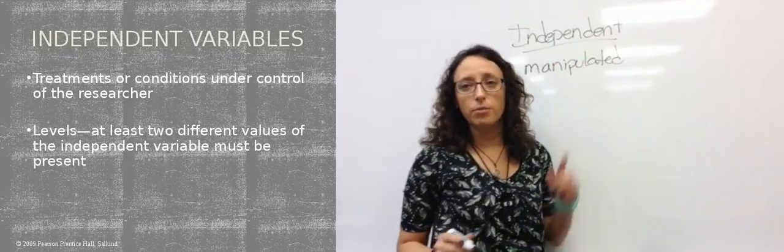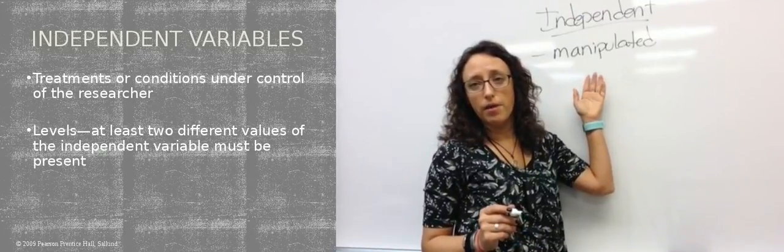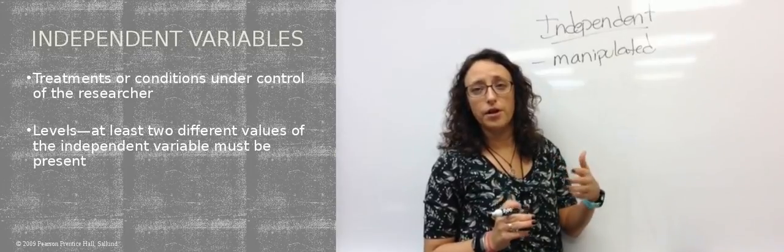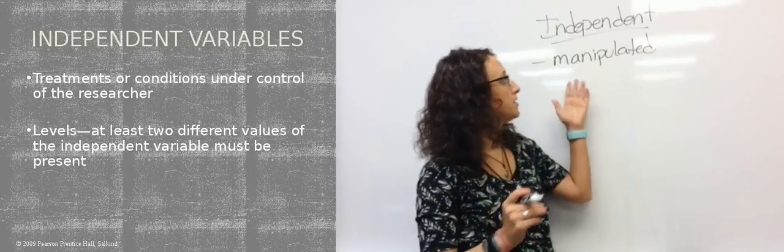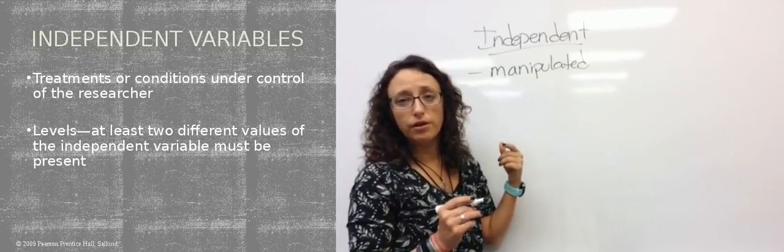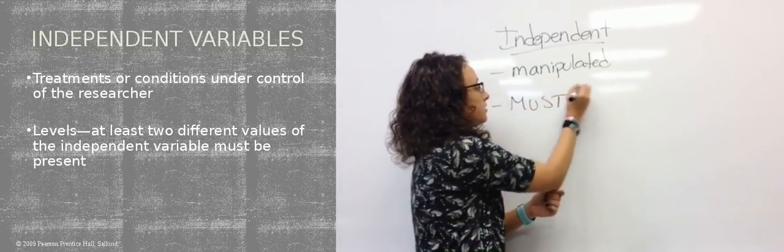So independent variable is what is manipulated in our experiment or in our study. This is under the control of the researcher. The researcher is manipulating this. It has to be groups or it has to be levels for this to work in our studies.